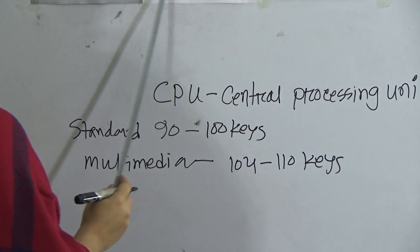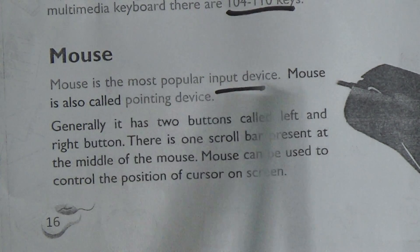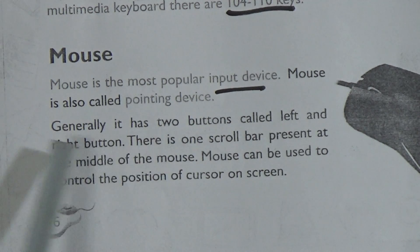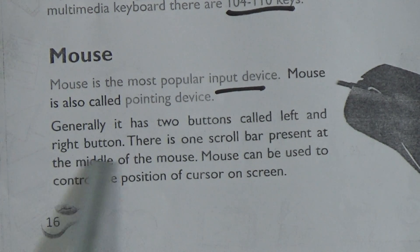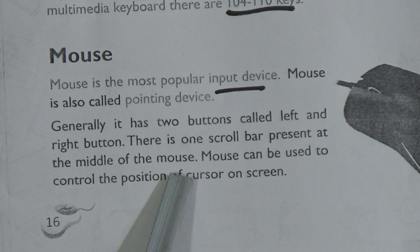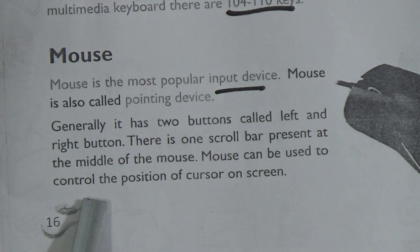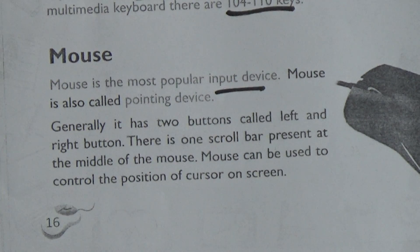Mouse is the most popular input device. The mouse is also called a pointing device. Generally it has two buttons called left and right buttons. The middle portion is called the scroll button — there is one scroll button present at the middle of the mouse. The mouse can be used to control the position of the cursor on the screen.